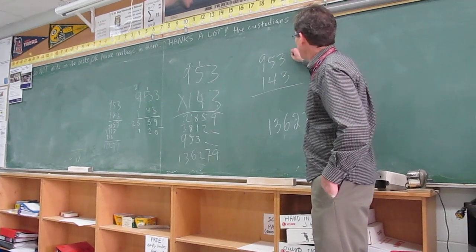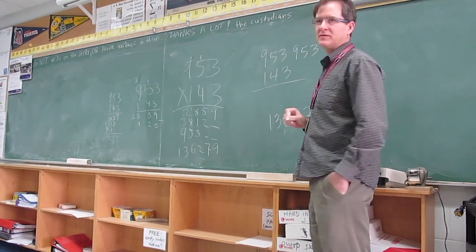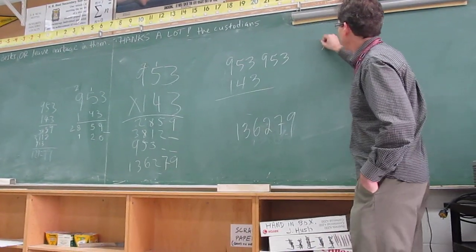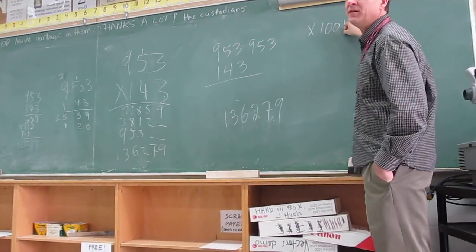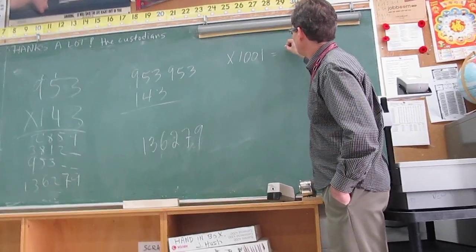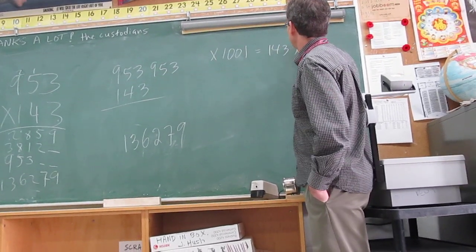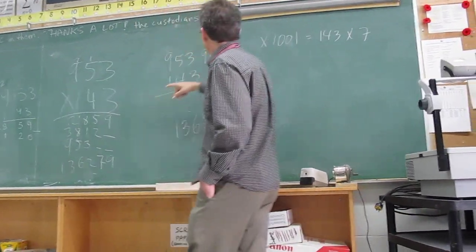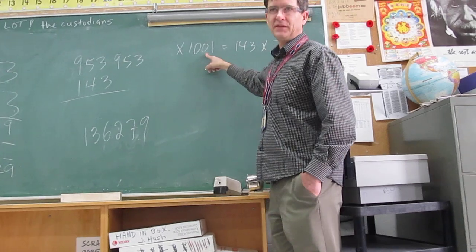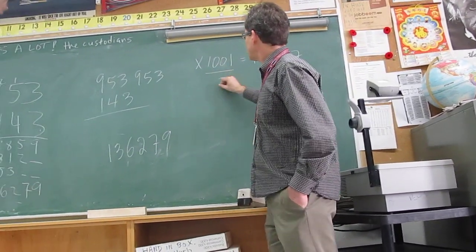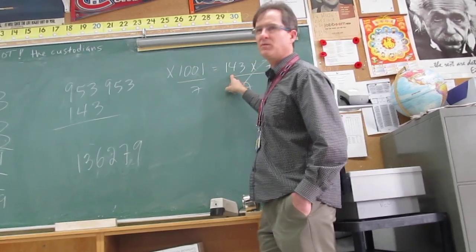In my mind, I write that number out twice because if I multiply it out twice, what I multiply by is 1001. Right? And 1001 equals 143 times 7. So when they're multiplying by 143, I multiply by 1001 and then divide by 7 in my head. Because if I divide by 7, that's the same as multiplying by 143.